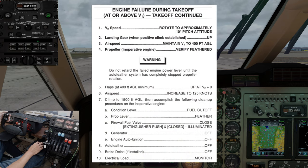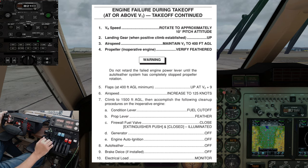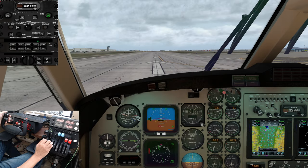Here is the checklist procedure per the airplane flight manual. You'll notice the first four steps are bold-faced, which implies they are memory items or immediate action items. These must be done in a timely fashion by memory, without reference to a checklist following the relevant failure. Alright, let's get going.